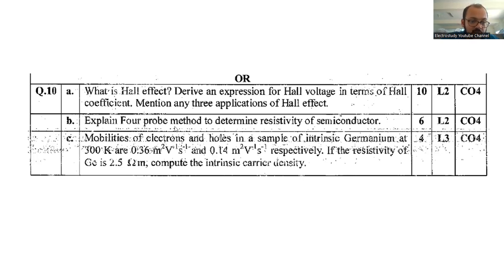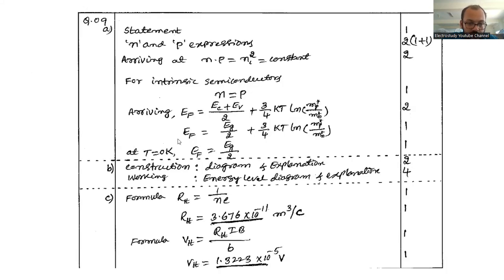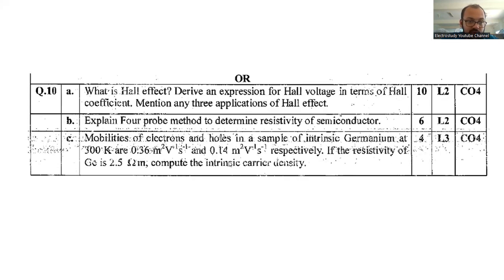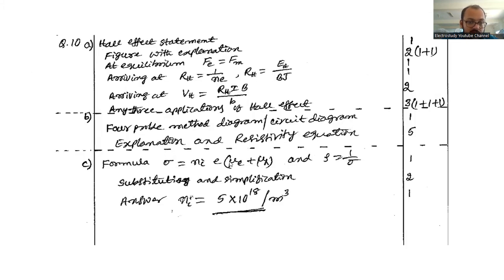Question number 10b: Explain four probe method to determine the resistivity of the semiconductor. In the previous question, don't forget to mention the applications as well. For four probe method: diagram or circuit diagram, explanation, and resistivity equation you will be getting 5 marks.